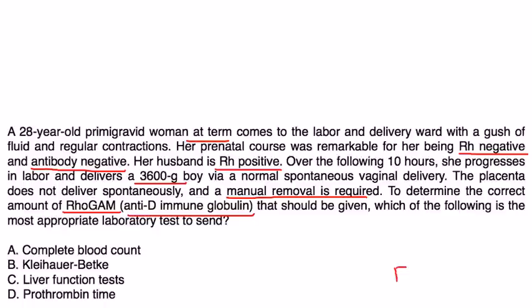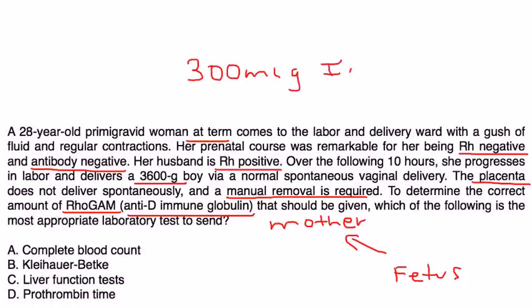What we're trying to measure here—this is a very good question because manual removal of placenta unfortunately transfers more blood from the fetus to the mother than normal. You would normally just give 300 mcg of RhoGAM as an IM shot, but you might need to give more because of this manual placental removal.